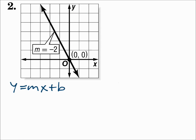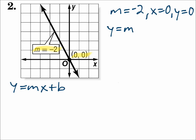Number 2: this line has a slope of negative 2 and it goes through the point (0, 0). Find the slope first — we know the slope, it's negative 2. Now find b. We'll use m equals negative 2, and from the point x equals 0 and y equals 0. We'll substitute those into the formula y equals mx plus b and solve for b.